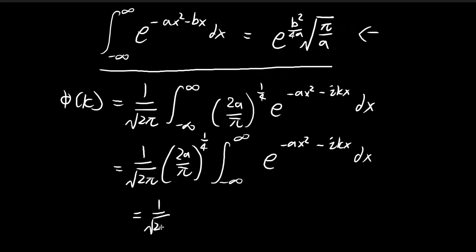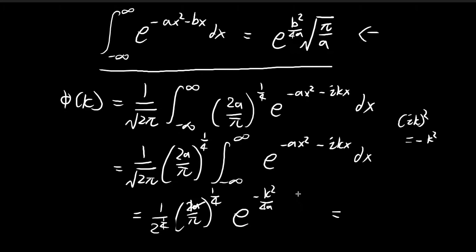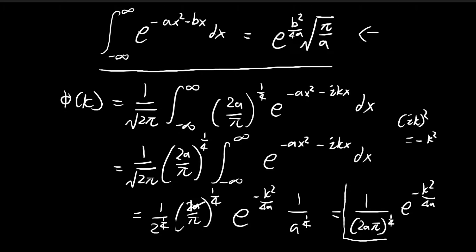By substituting into the formula, we find b² = (ik)² = −k². So we have −k² divided by 4a, times the square root of π/a. This gives us our φ(k). We can clean this expression up: the π terms cancel, and we have 2^(1/2) and 2^(1/4) which combine so that term becomes 1/2^(1/4), and similarly for 'a', giving 1/a^(1/4). Combining everything together, φ(k) = (2a/π)^(1/4) times e to the power of −k²/(4a).